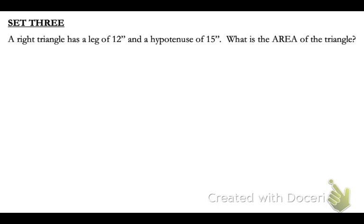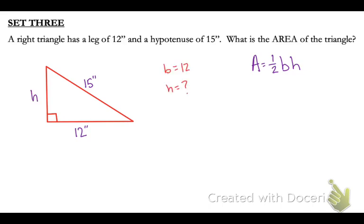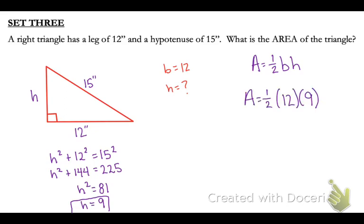On set 3, they're giving us a right triangle that has a leg of 12 inches and a hypotenuse of 15 inches, and they're asking us to find the area. So the most important thing for us to start with is a diagram that's labeled correctly. If we're asking to find the area, that's 1/2 base times height. With the information that they've given us, we know that the base is 12 and we don't know the height. We can find the height using the Pythagorean theorem. When we solve that out, we end up with our height as 9. Plug that into our 1/2 base times height equation, and we end up with an area of 54 inches squared.